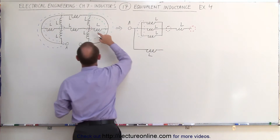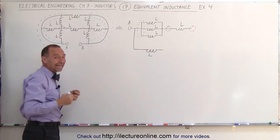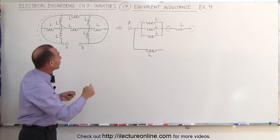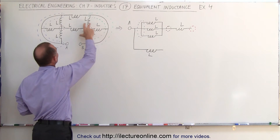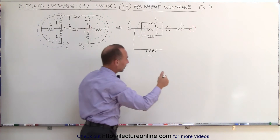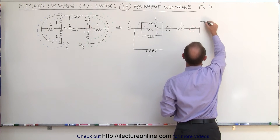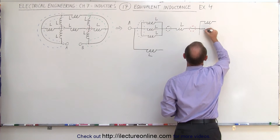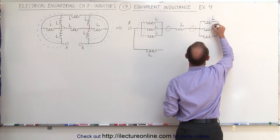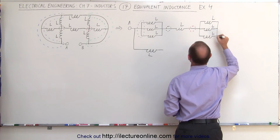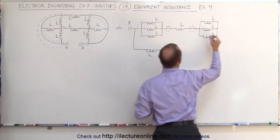Notice that to go from the red branch point to the green branch point, again we can get there through any one of three inductors. So we have the same situation as before — we're going to have another branch point with three inductors L, L, and L. Then they come together and connect to B.